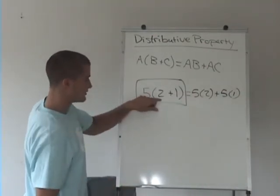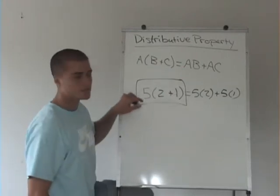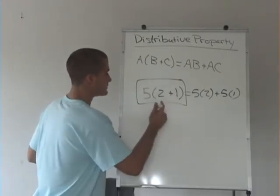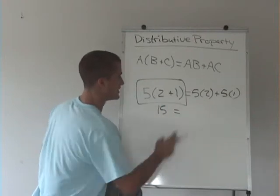If we do this, we can obviously just take 2 plus 1 is 3, times 5 is 15. So we know this side is equal to 15, and then we'll see if it matches up.